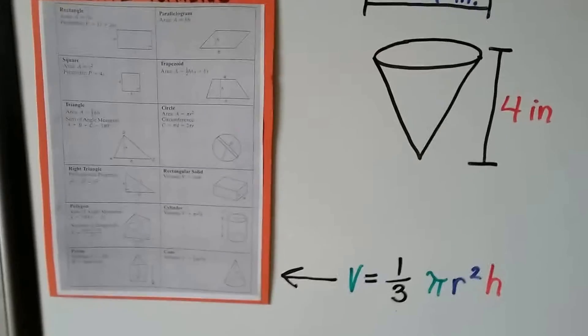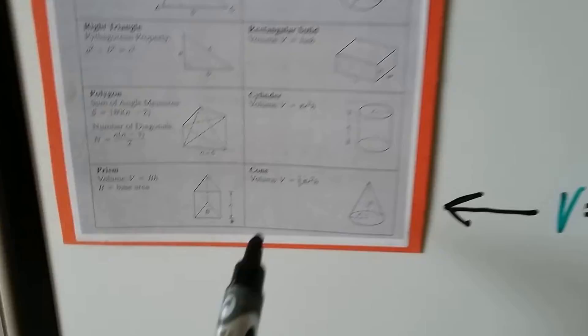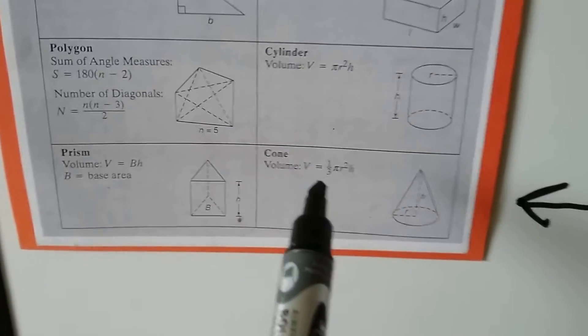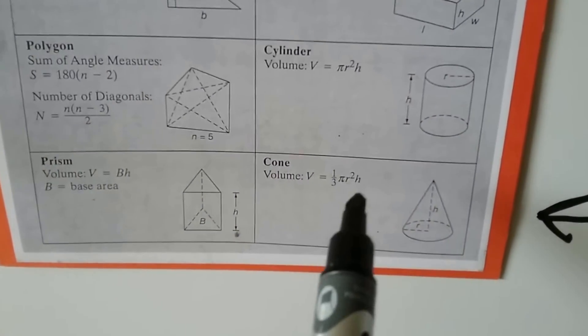We'll look at our sheet of formulas here. We can see this one down here: cone is V equals one-third pi r squared h.